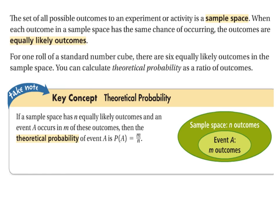When we have a set of possible outcomes to an experiment or activity, that's called the sample space. All possible outcomes to an experiment or activity is the sample space. When each outcome in a sample space has the same chance of occurring, the outcomes are considered equally likely outcomes. A normal way of looking at that is one roll of a standard number cube. We've got six equally likely outcomes in the sample space. When we say standard number cube, that's just a fancy way of saying a six-sided die.